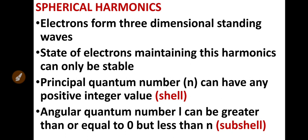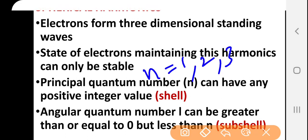Since we are talking about the shell, what quantum number justifies the existence of a shell? That is the principal quantum number, denoted by N. These electron states are grouped into shells on the basis of quantum numbers, and the basic quantum number is the principal quantum number. Spherical harmonics says that the principal quantum number can have any positive integer value — N equals 1, 2, 3, and so on. N equals 1 signifies the first shell, N equals 2 the second shell, and so on. It basically represents the average distance from the nucleus.